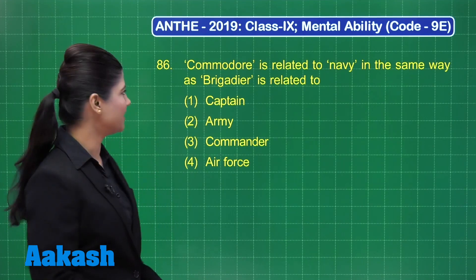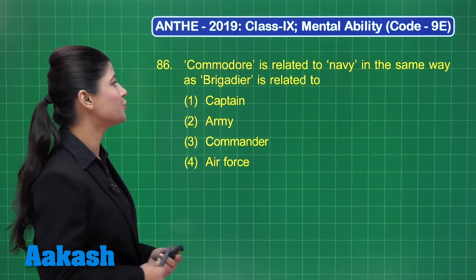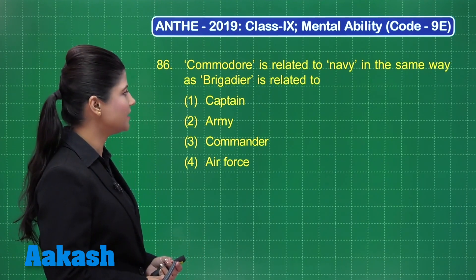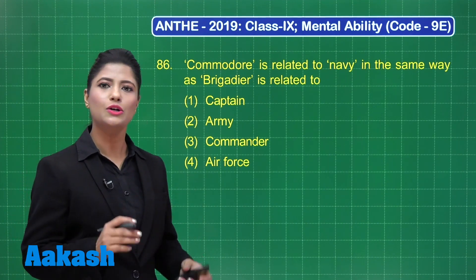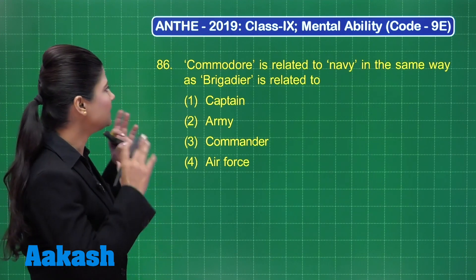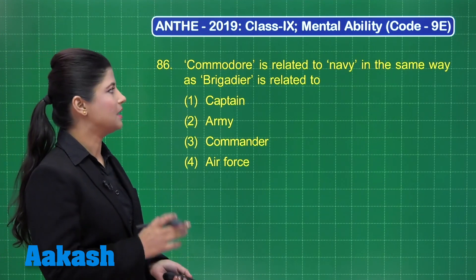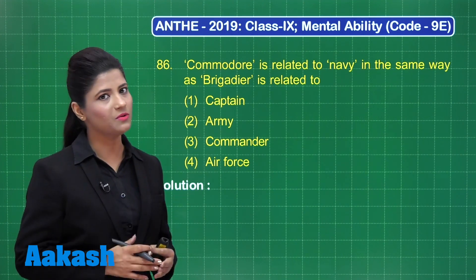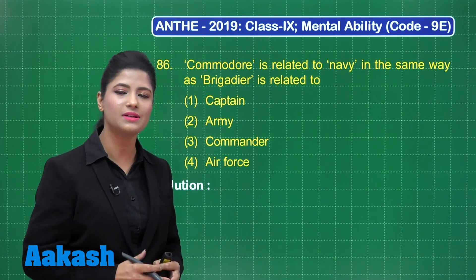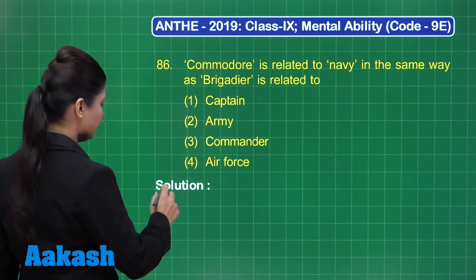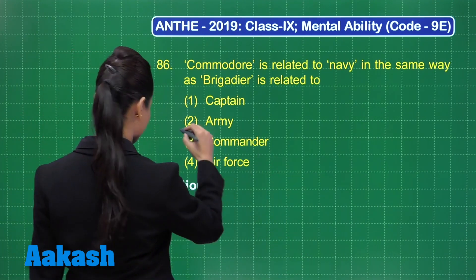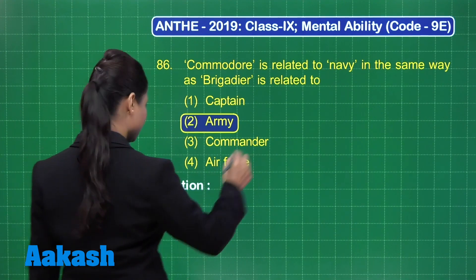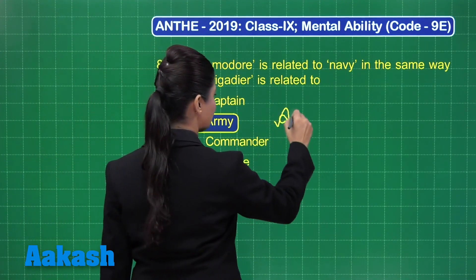Let's take up question number 86. It states that Commodore is related to Navy in the same way as Brigadier is related to one of these options. Commodore is a rank of officer in Navy. In the similar way, Brigadier is a rank of officer in Army. That's why the correct answer for this question should be option number 2, that is Army. You can mark the answer as option 2.